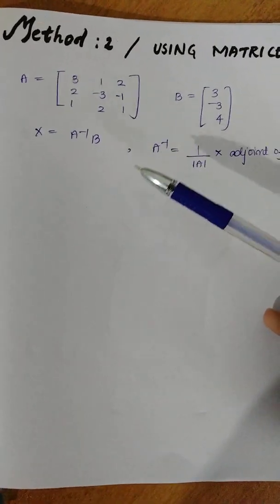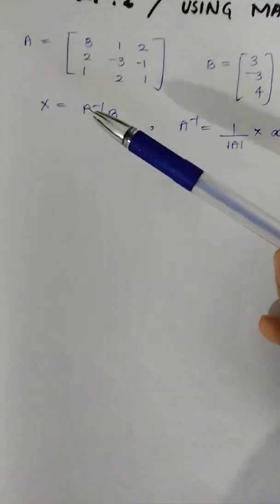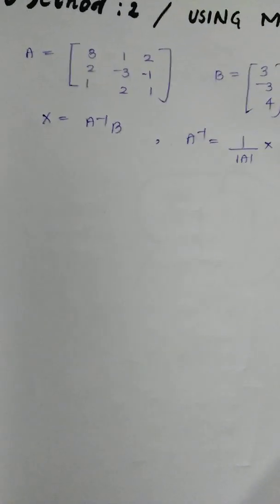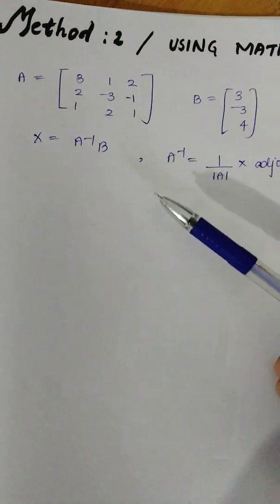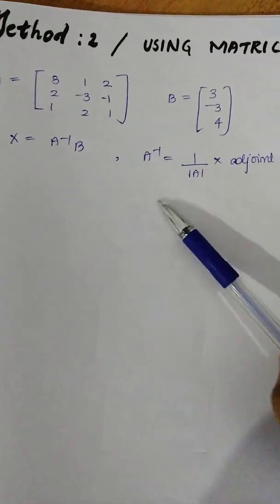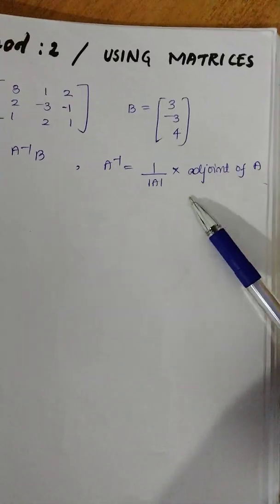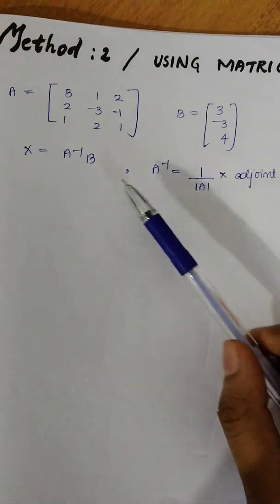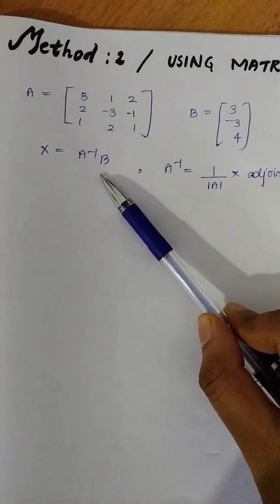In this method, we will use the solution. This is the equation: x is equal to A inverse b. A inverse is equal to 1 by determinant of A, into adjoint of A.